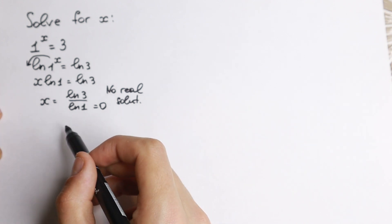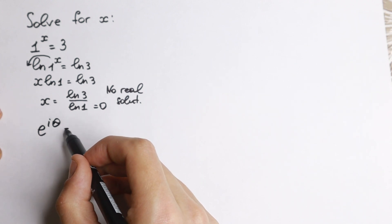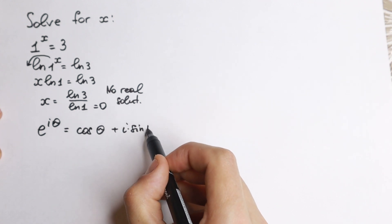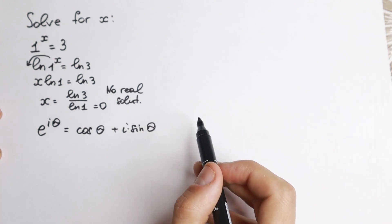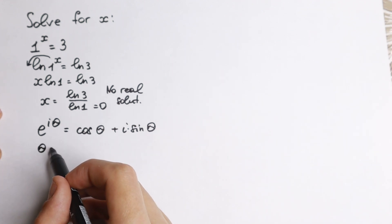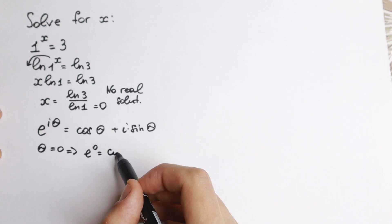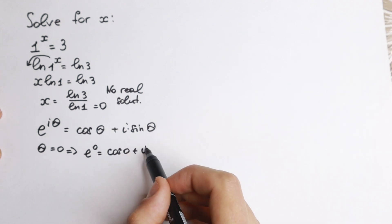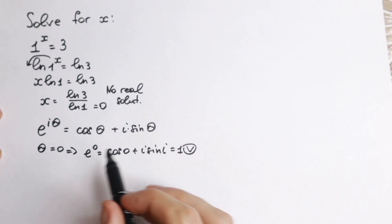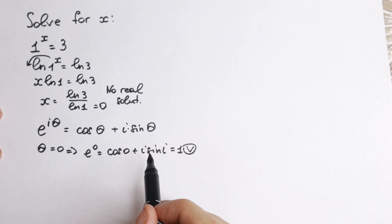First of all I want to write this form. A lot of students know this form: e to the power i times theta equal to cosine theta plus i times sine theta. Everyone knows this form — it's a really good form. Take a look closely: if theta equals 0, we have e to the power 0 equal to cosine 0 plus i sine 0, which equals 1. So this formula works perfectly with theta equal to 0, and of course for every other number as well.